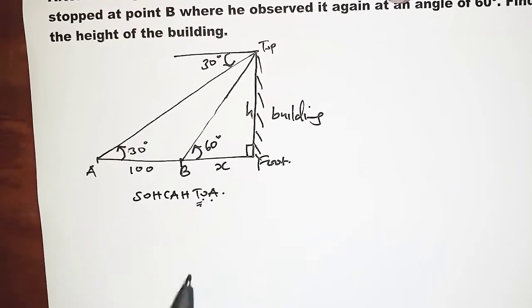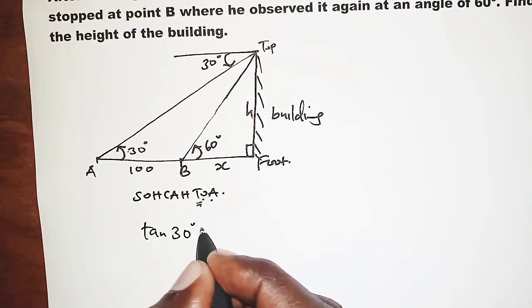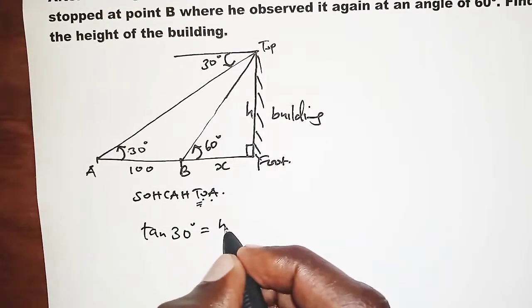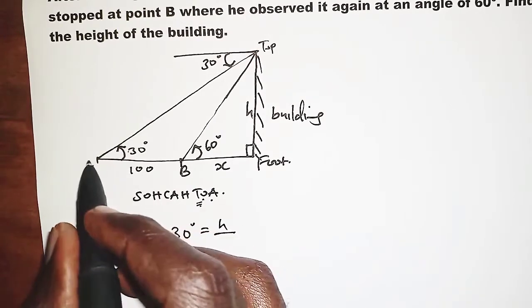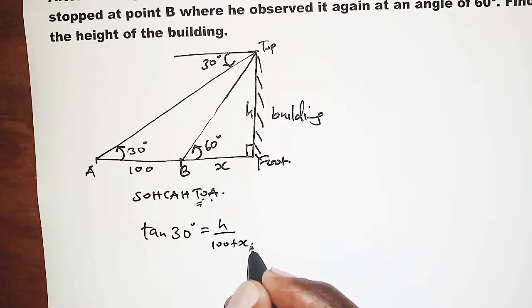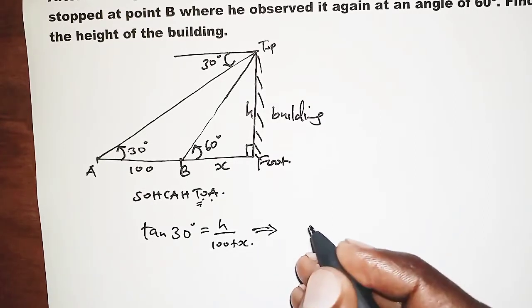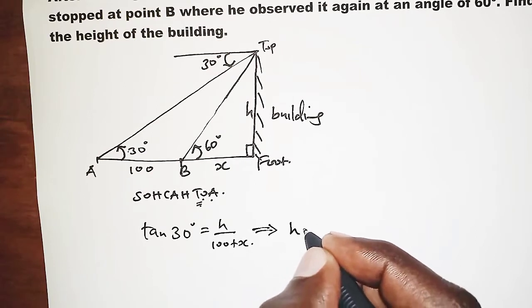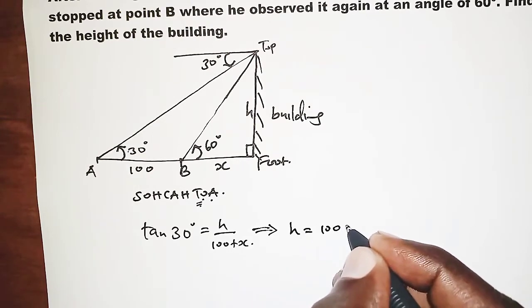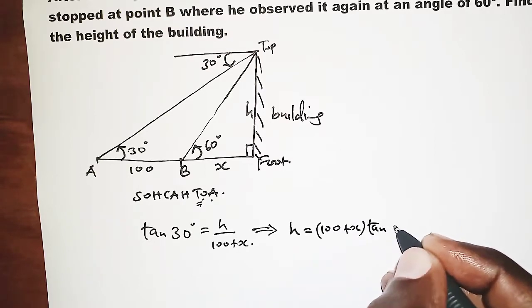So applying tangent, we'll say tan 30° equals opposite, which is the height H, over adjacent, which is the whole of this length, 100 plus X.